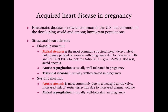Acquired heart disease in pregnancy is less common than it was 50 years ago; congenital heart disease is slightly more common nowadays. The reason is that rheumatic disease used to be the main driver of acquired heart disease complications in pregnancy. We now give antibiotics for strep infections — not just to shorten the sore throat but to prevent rheumatic disease. Since rheumatic disease is rare in the industrialized world, we don't see the mitral stenosis that results from it. However, immigrant patients from the developing world may present with this.